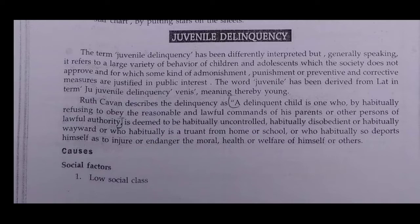So what is juvenile delinquency? Juvenile means below 18 years — a child. And delinquency means any bad behavior from the child. The term juvenile delinquency has been differently interpreted, but generally speaking it refers to a large variety of behaviors of children and adolescents which the society does not approve, and for which some kind of admonishment, punishment, and preventive and corrective measures are justified in public interest.